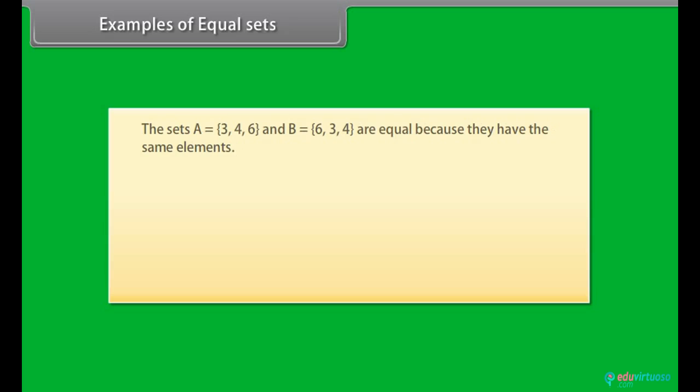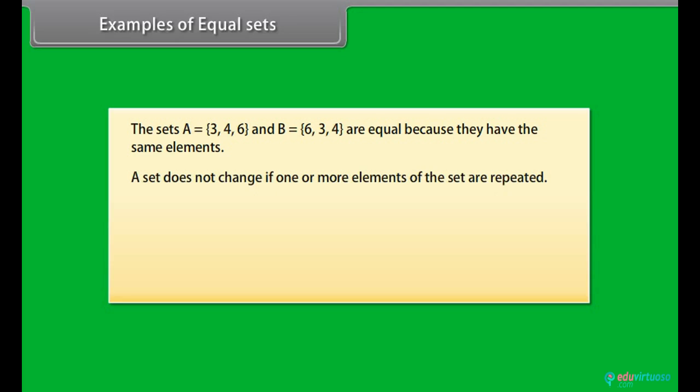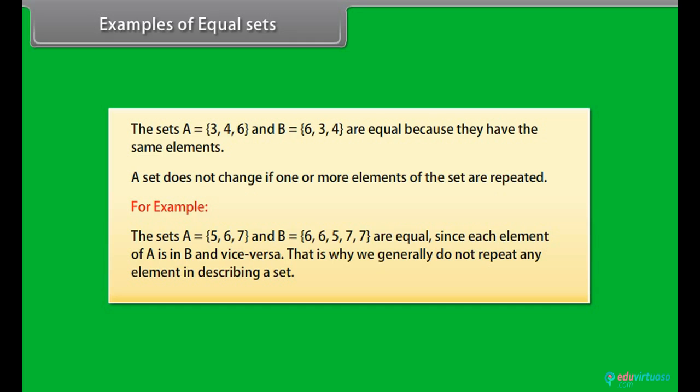Examples of equal sets. The sets A equals 3, 4, 6 and B equals 6, 3, 4 are equal because they have same elements. A set does not change if one or more elements of the set are repeated.